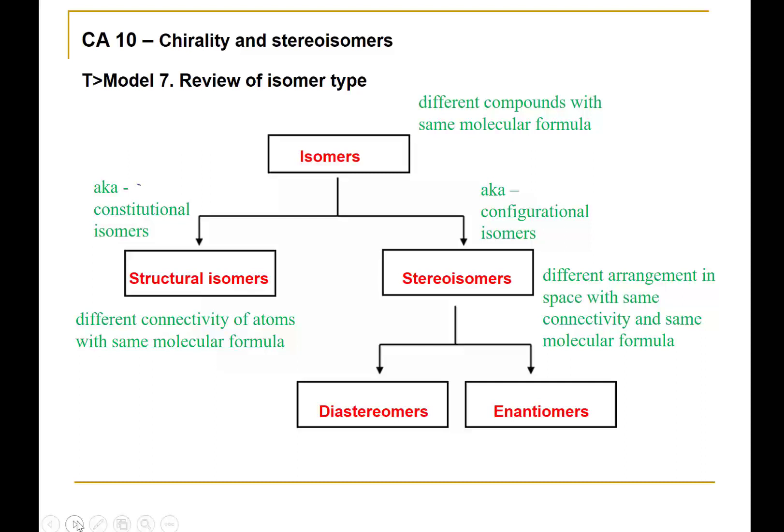Stereoisomers — also known as configurational isomers — have the same atom connectivity and the same molecular formula, but a different arrangement in space, either about a ring structure, about a double bond, or in relation to a mirror image. Enantiomers are stereoisomers that are non-superposable mirror images. Diastereomers are stereoisomers that are simply not enantiomers, and we saw this can arise from a carbon-carbon double bond or from lack of rotation about a ring structure. In our class live sessions, we'll review these concepts and do examples to reinforce these ideas.